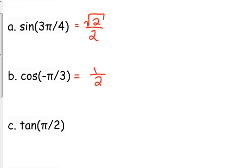Tangent. Tangent of pi over 2. Now, we don't have tangent on the unit circle. The unit circle gives us sine and cosine, so what we have to do here is we have to realize that tangent is equivalent to sine over cosine.